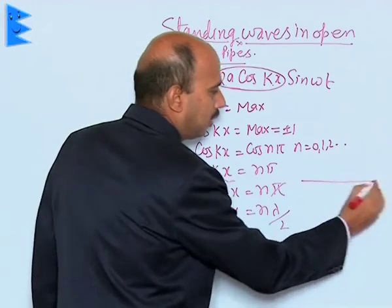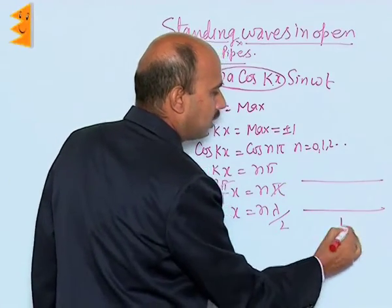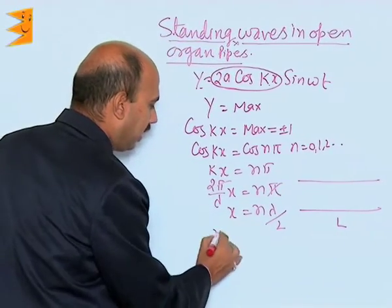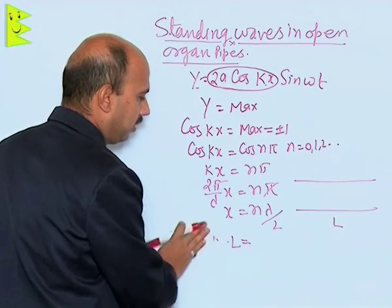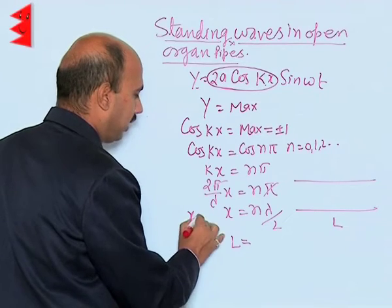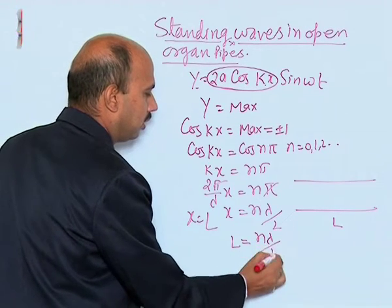If you're taking an open organ pipe like this whose length is L, we can write x equals L equals, in this case, if you take x equals L, then nλ/2.